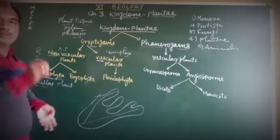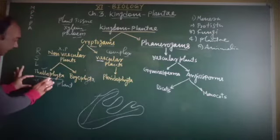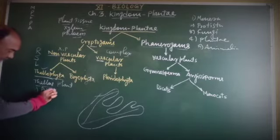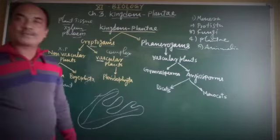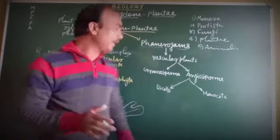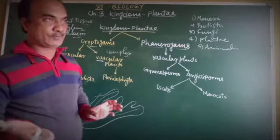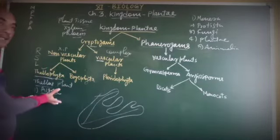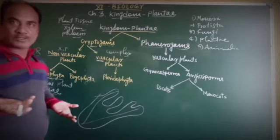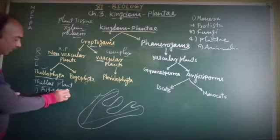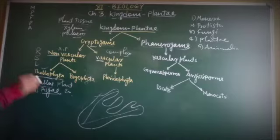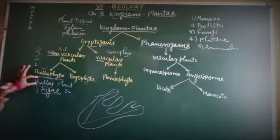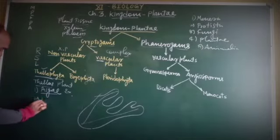Plants where root, stem, and leaves are undifferentiated are called thallus, and these plant bodies are called Thallophyta. For example, algae. Algae are aquatic in habitat — plants found in water. For example, Spirogyra is an example of algae with a thalloid nature — undifferentiation of root, stem, and leaves. Another example within Thallophyta is fungi.